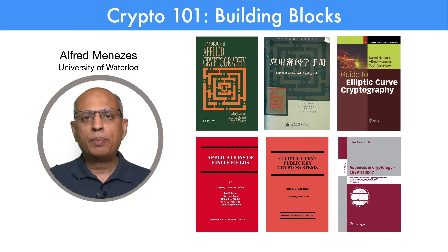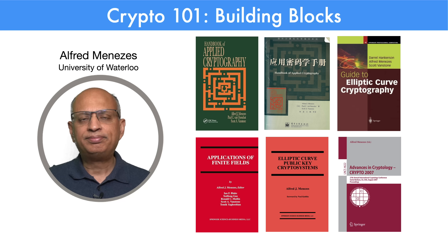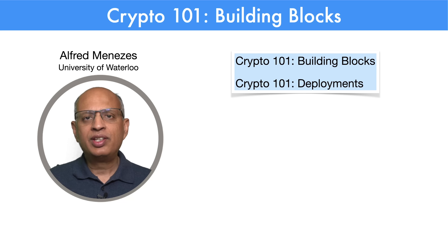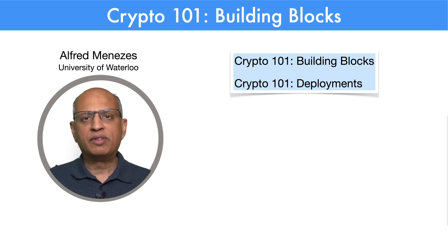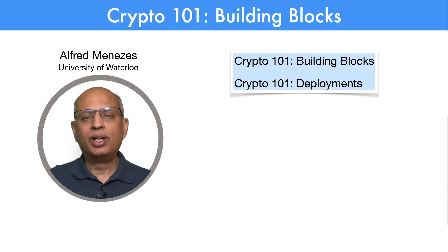This Crypto 101 course is comprised of the lectures for my applied cryptography course. I've divided the course into two parts: Building Blocks, which covers the fundamental cryptographic primitives, and Deployments, which explains how these primitives are used to secure large-scale applications.